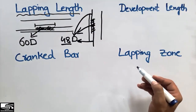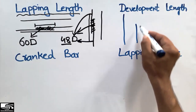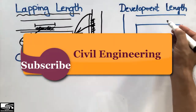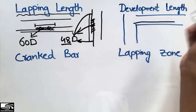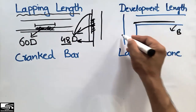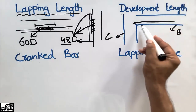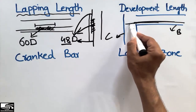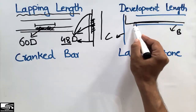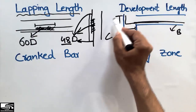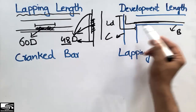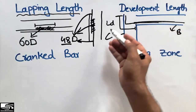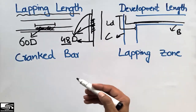The second topic is the development length. The development length is defined as the length of the steel bar used to transfer load and stress from one member to another. For example, with a beam and a column, the steel bar extends from the beam and is anchored into the column. That embedded length is the development length, and it is responsible for transferring load from the beam to the column.